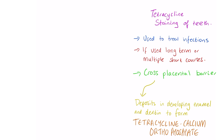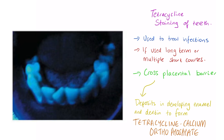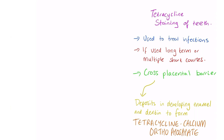You can diagnose it by using an ultraviolet light — shining UV light on these teeth makes them appear more yellow. A key way to prevent this is to avoid giving tetracycline to pregnant patients and children. Doxycycline is an alternative antibiotic with less risk of this discoloration.